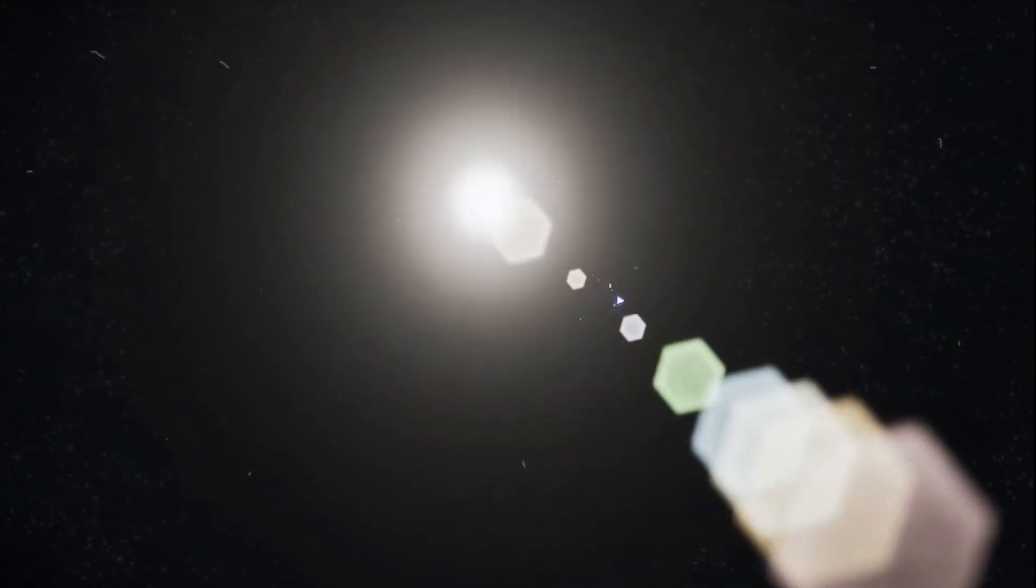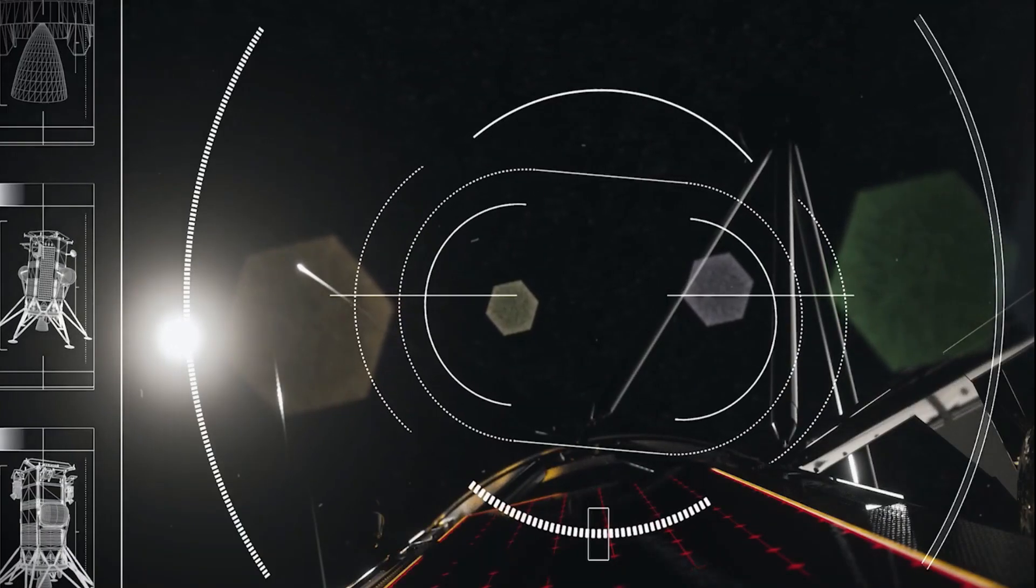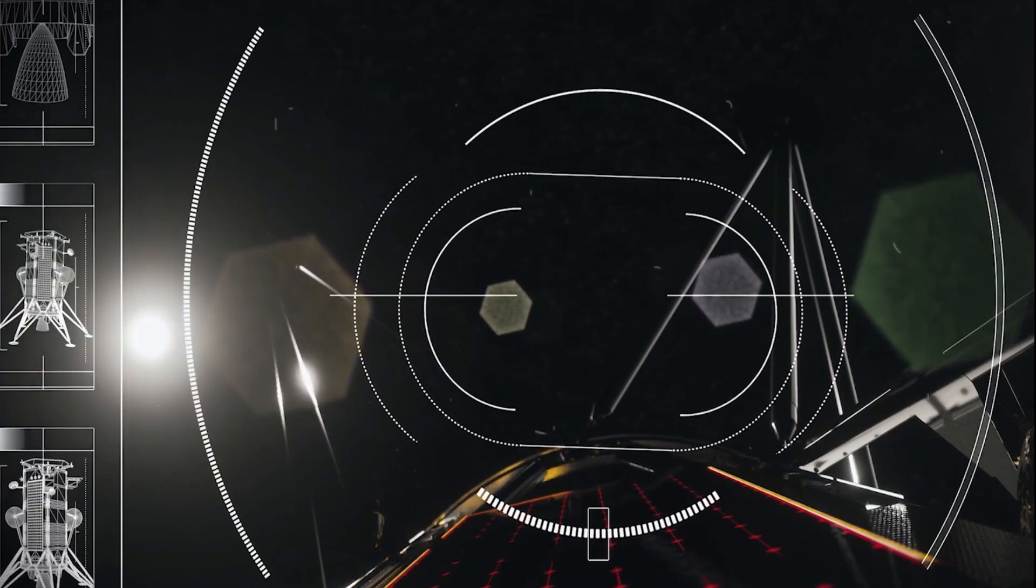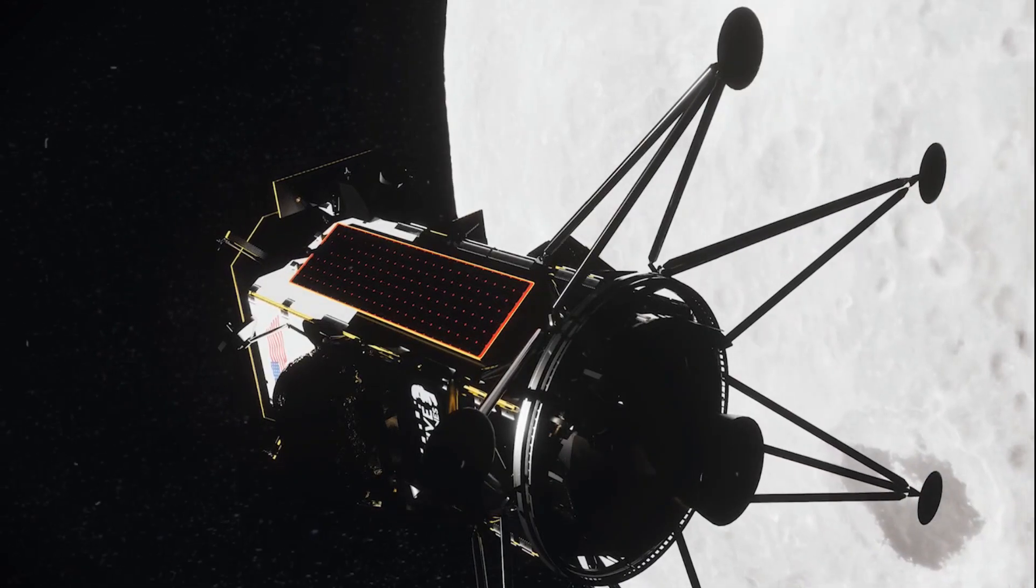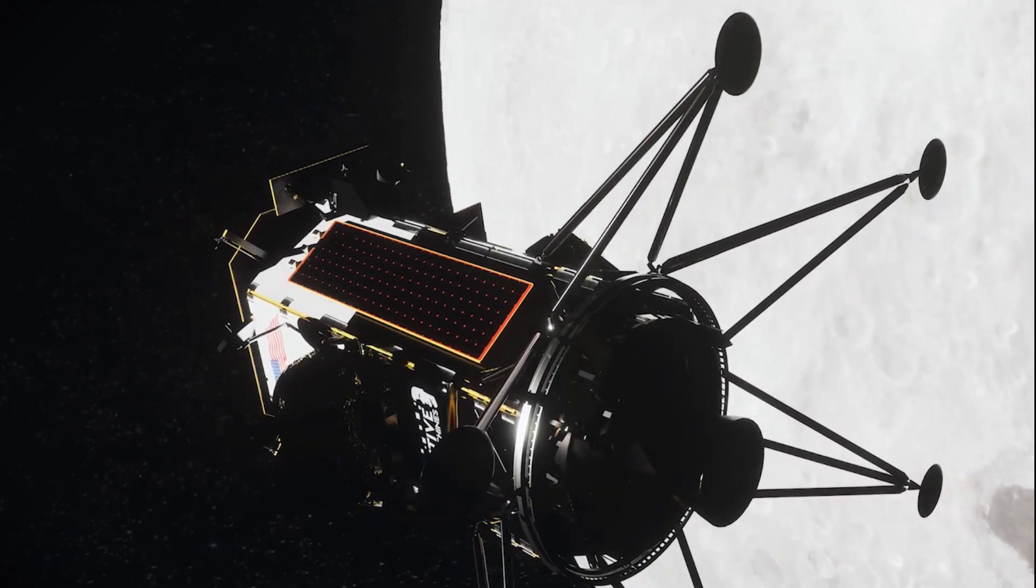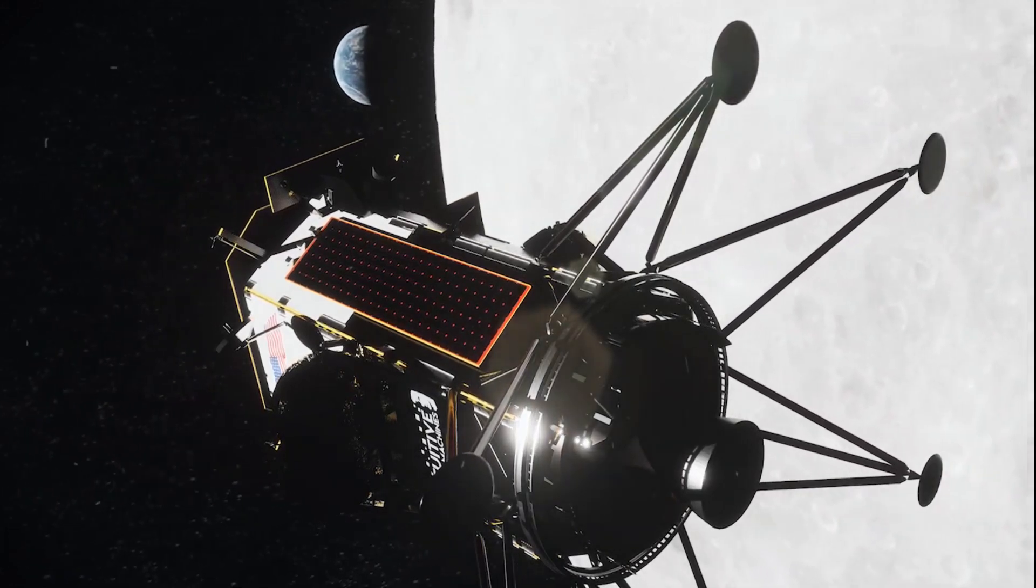Once Odysseus touches down on the Moon, it's expected to work tirelessly for 7 days, conducting experiments and gathering data before the lunar night descends. This tight timeline highlights the importance of maximizing the lander's operational efficiency during its brief stint on the lunar surface.